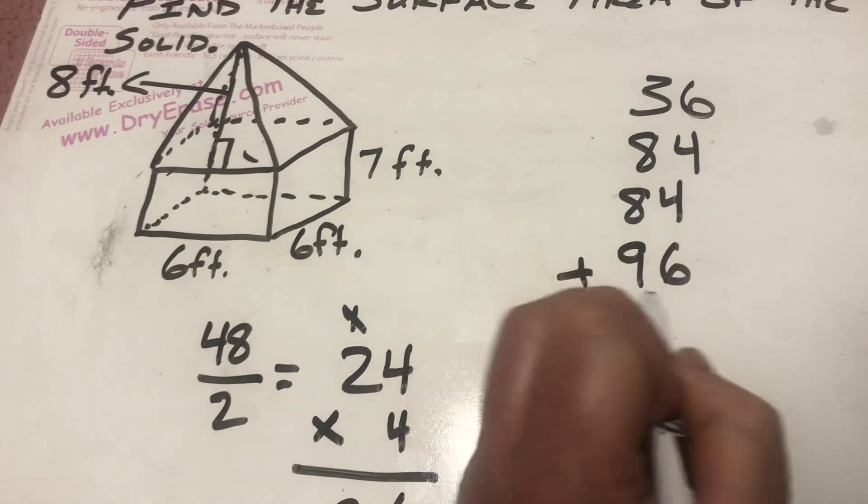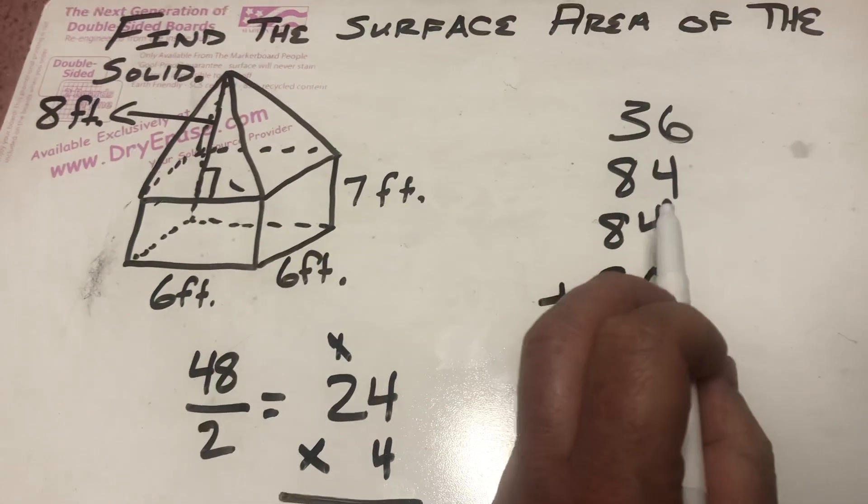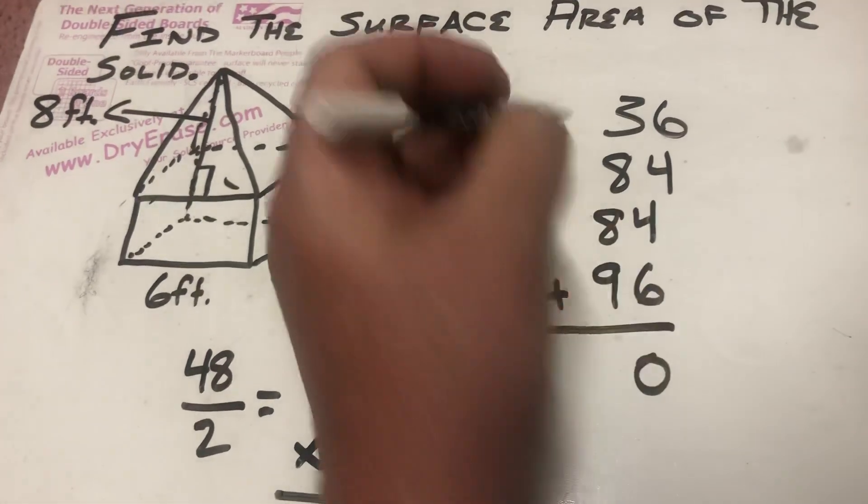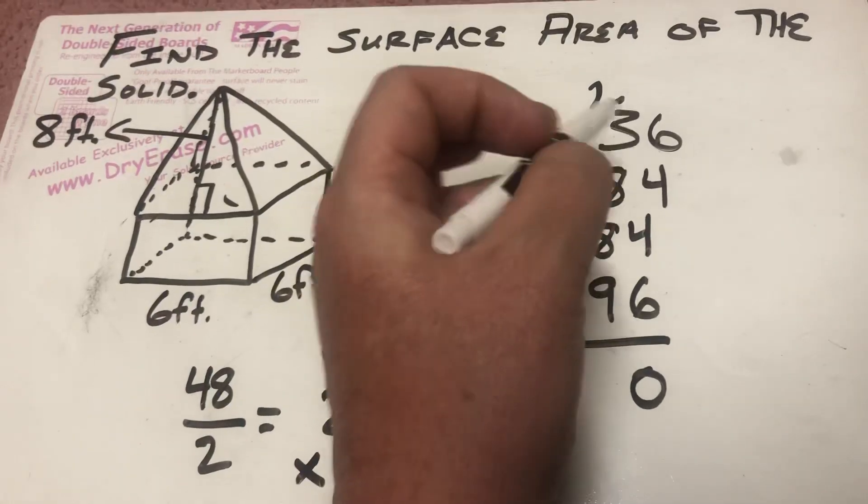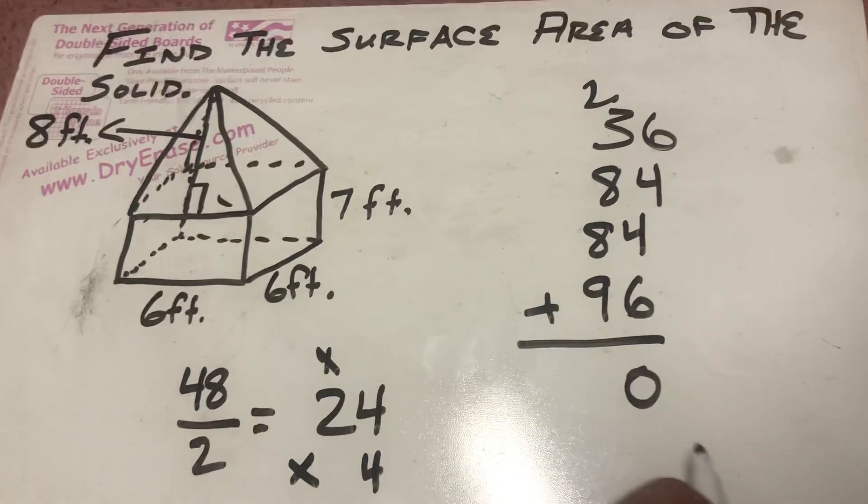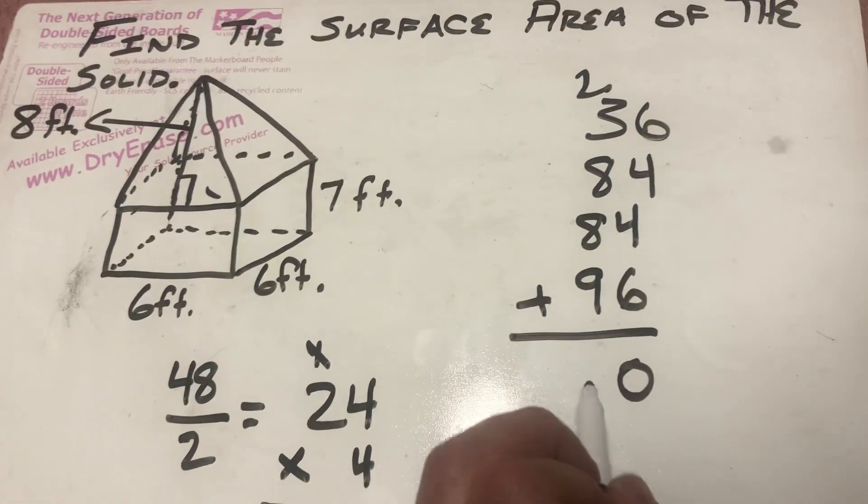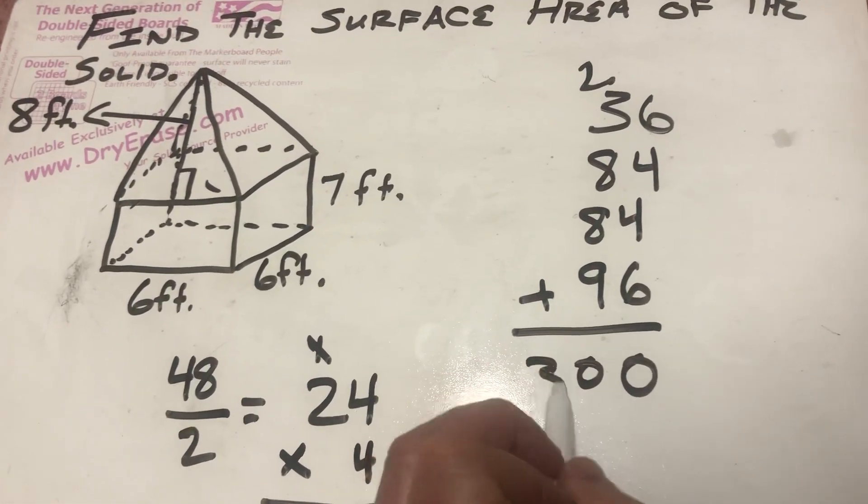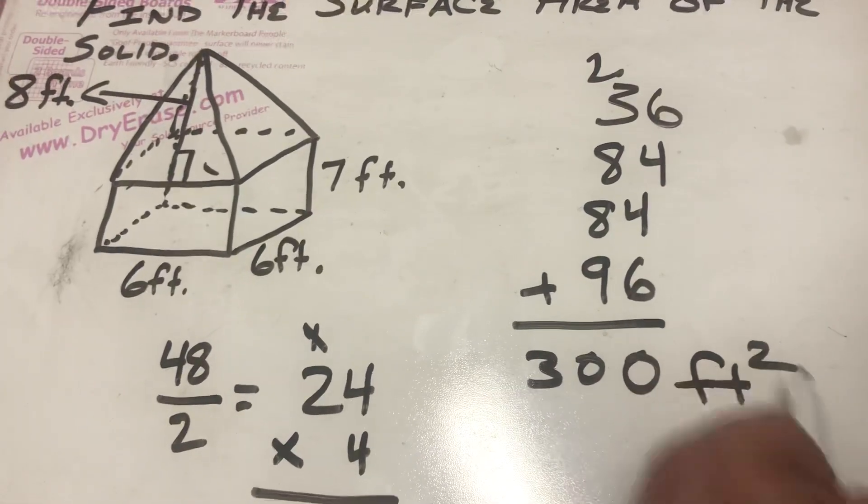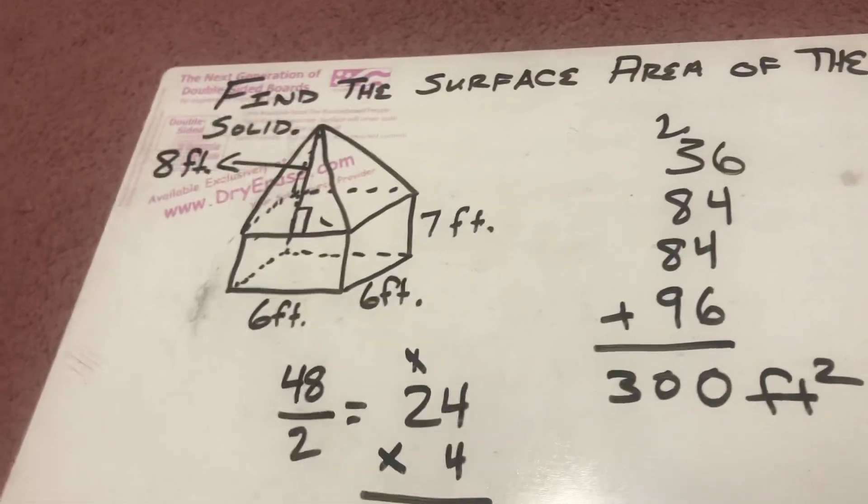So, that's 96. 6 plus 4 is 10, plus 4 is 14, plus 6 is 20. Put the 0 down, carry the 2. 2 plus 3 is 5, plus 8 is 13, plus 8 is 21, plus 9 is 30. I get 300 square feet as a surface area for that solid.